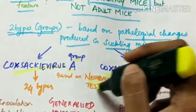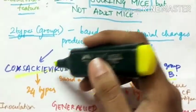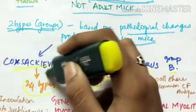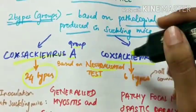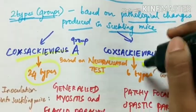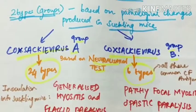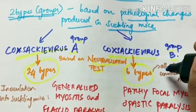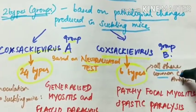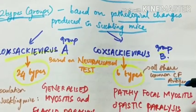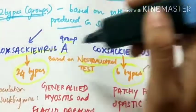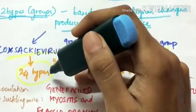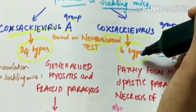Based on the neutralization test, Coxsackie group A virus is further classified into 24 types and Coxsackie group B virus into 6 types. All 6 types of Coxsackie B virus share a common complement-fixing antigen.